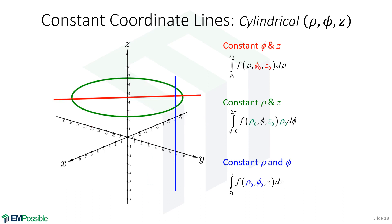Here are our constant coordinate lines from cylindrical coordinates. If we fix phi and z, we're integrating in the rho direction — a straight line at some angular orientation in the xy plane. If we fix rho and z, we're integrating over phi and actually integrating around a circle, useful for a loop antenna or loop wire. And if we fix rho and phi, we're integrating in the z direction, just like a vertical line in Cartesian coordinates.